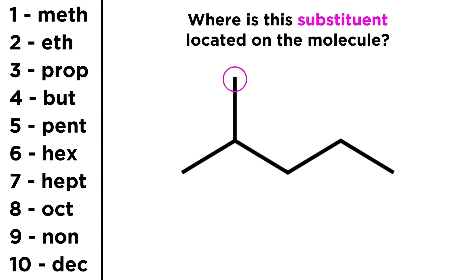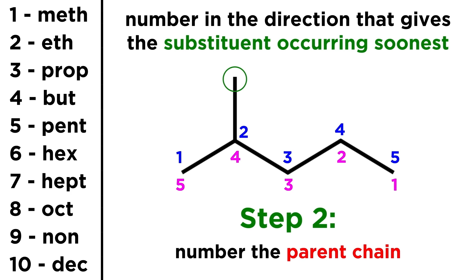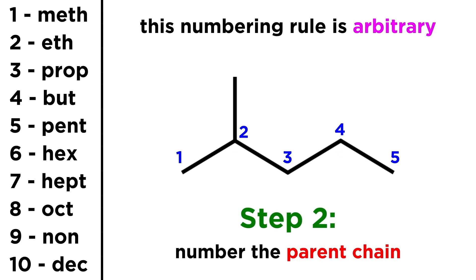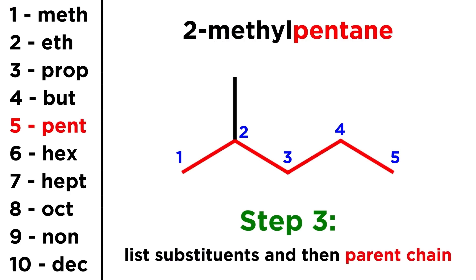Next, we have to be able to communicate where this group is located on the molecule. To do that, we have to number the parent chain — that's these 5 carbons numbered 1 to 5 — and we have two options: we could number left to right, or right to left. We will choose the direction that gives this substituent occurring soonest, or on the lowest numbered carbon possible. So we number left to right, such that it occurs on carbon 2 rather than on carbon 4. This rule, just like the rest of the rules we will learn, is totally arbitrary — it is not designated by any natural phenomenon, it is just a rule we made up and all follow, so that we will all agree on how to name this molecule. Now that we have all the information, let's put it together. We always start by listing any substituents with a number indicating where they occur. Here that will be 2-methyl. Notice that we have a number, then a hyphen, then the substituent, with no spaces. Then we list the parent molecule: pentane. 2-methylpentane.